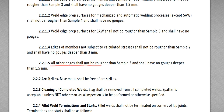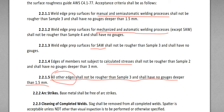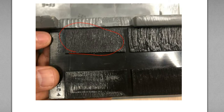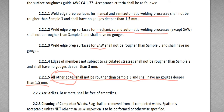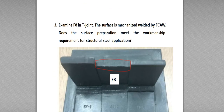All other edges shall not be rougher than sample 3 and shall have no gouges deeper than 1.5 mm. So, other than 2.2.1.1, 2, 3, and 4 — which cover mechanized and automatic welding processes, SAW, calculated stress members, and manual and semi-automatic welding processes — all other edges shall not be rougher than sample 3. I'm going to show you the brief idea of the actual question.